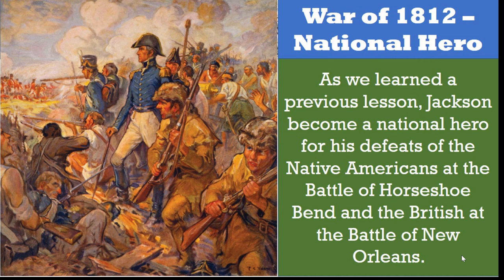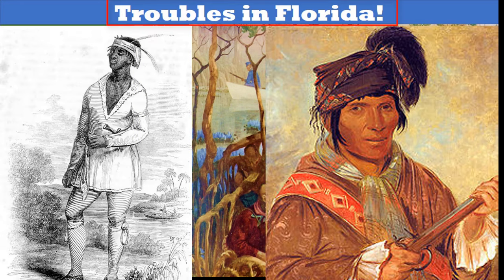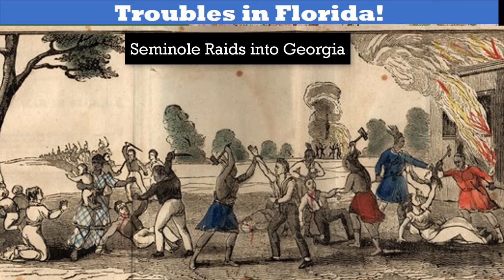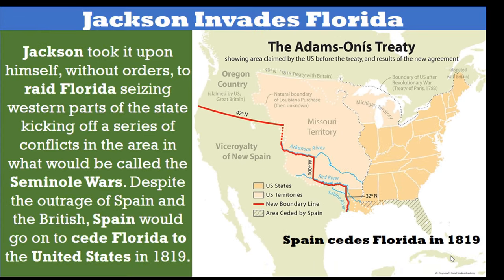Jackson would take his role as a militia leader to new heights in the American military, providing him with national fame and sometimes notoriety for the wrong reasons. Following the War of 1812, tensions had risen with Spain over Florida, which was a refuge for slaves and Creek Indians. The two groups united, calling themselves the Seminoles, which means runaway. And in 1818, then General Andrew Jackson was sent south to stop the raids of the Seminoles into Georgia. Jackson took it upon himself without orders to raid Florida, seizing western parts of the state and kicking off a series of conflicts in what would be called the Seminole Wars. Despite the outrage of Spain, they would go on to cede Florida to the United States in 1819.